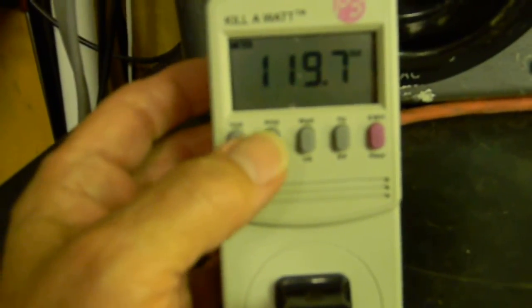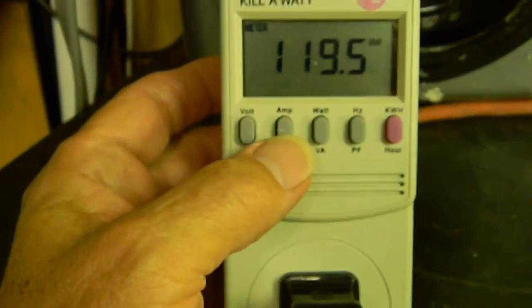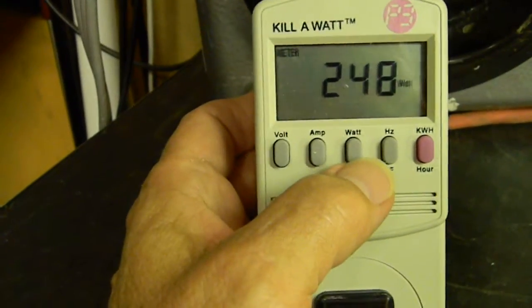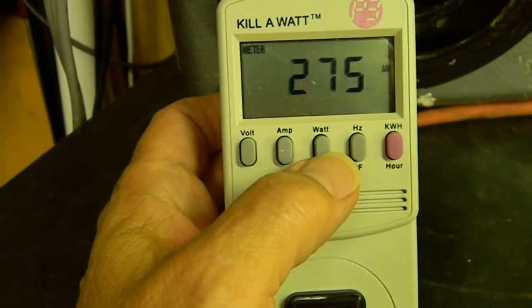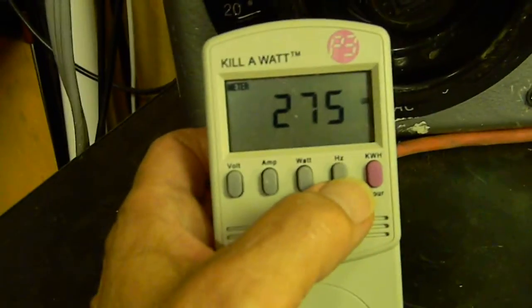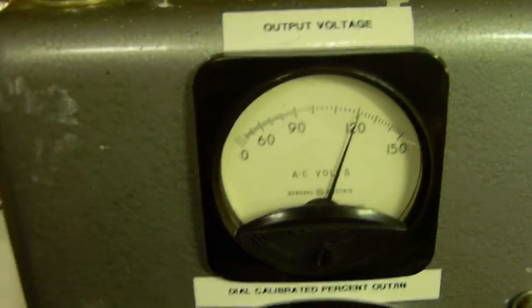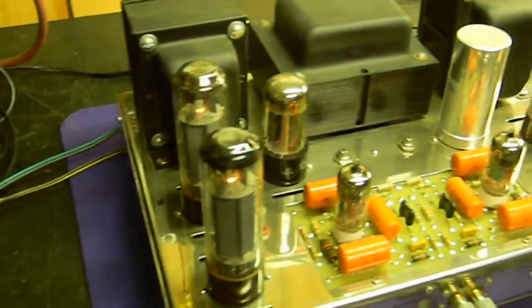At this power level, with both channels running wide open, our voltage is still close enough to 120. Our current is 2.3 amps. That's 248 watts, 275 volt amps. The power factor of 0.89. There's our voltage on an analog meter.